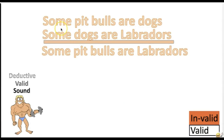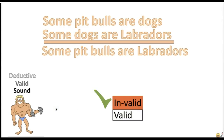Here's another practice problem: 'Some pit bulls are dogs. Some dogs are Labradors. Therefore, some pit bulls are Labradors.' Is this argument valid or invalid? The argument is invalid. Note that the premises are actually true and the conclusion is actually false — and as you remember, any such argument is invalid.